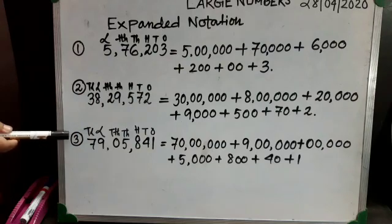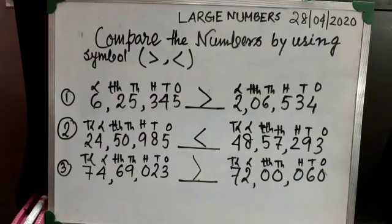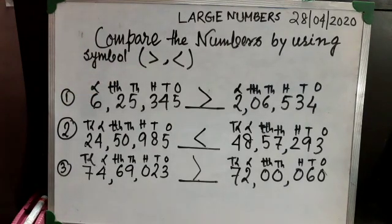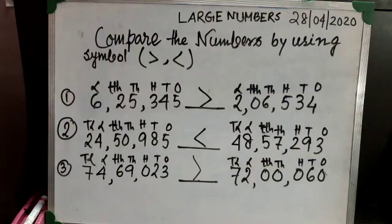I have given one more number as an example so that you can see it and try to understand. Now I am going to teach you how to compare large numbers by using the greater than and smaller than signs. I have given you two numbers, and above them I have written all the place values.